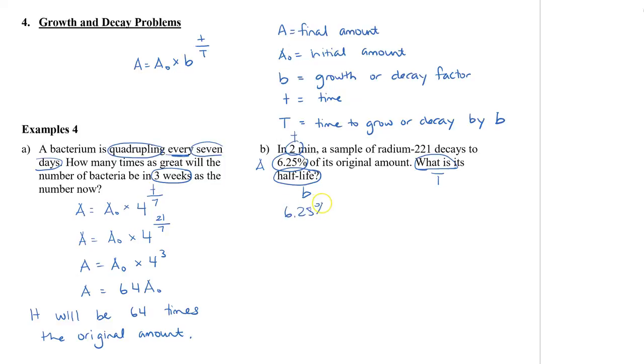6.25%, let's change that to 25 over 4%. I know that I want 25 over 4%. I start off with 100% times my base, which is half. My decay factor is half. We don't know how long it takes to decay by half. That's what we're looking for. So that T on the bottom is our variable. But we do know that it takes two minutes to decay from 100% to 6.25%, which is what is represented here.